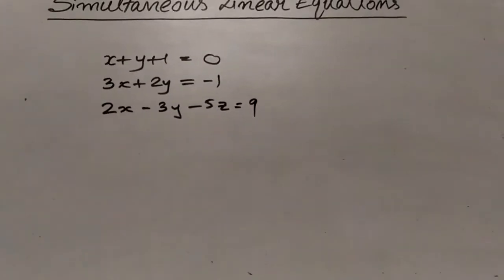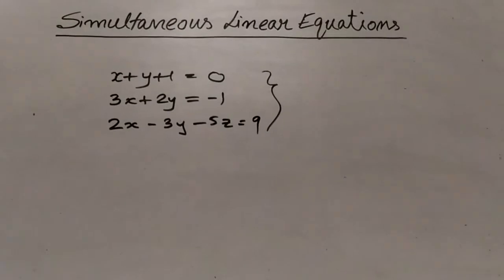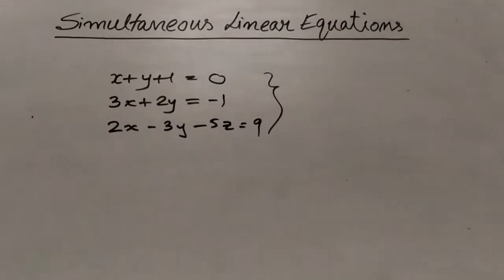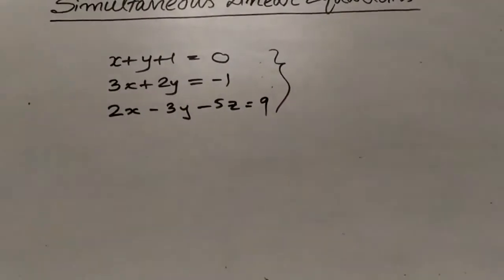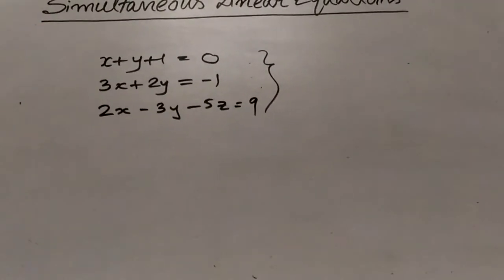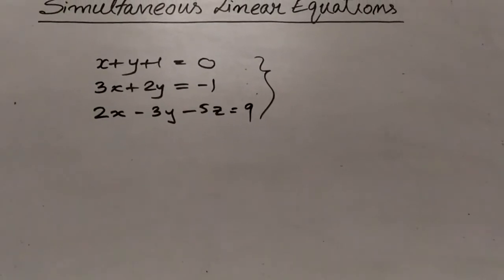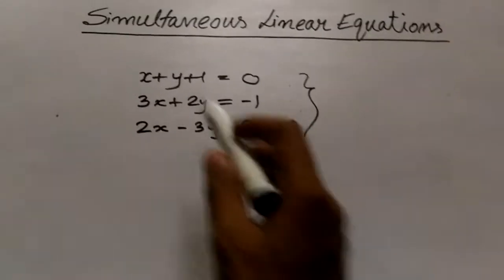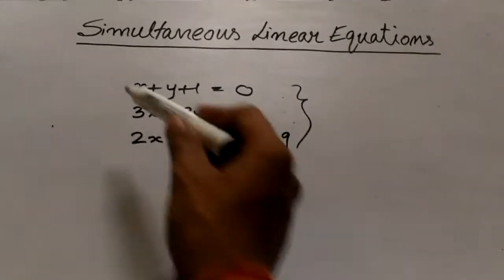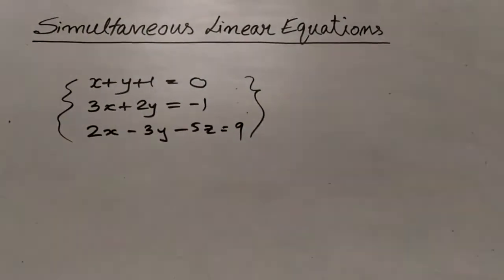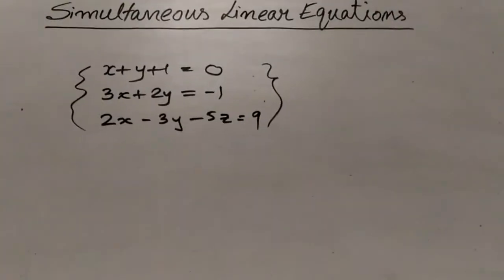Now, this is called simultaneous linear equations — three equations are given in the same variables x, y and z. What we can do is find out the values of these variables, since there are three equations it will be easier for us to find the values of the three variables x, y and z.